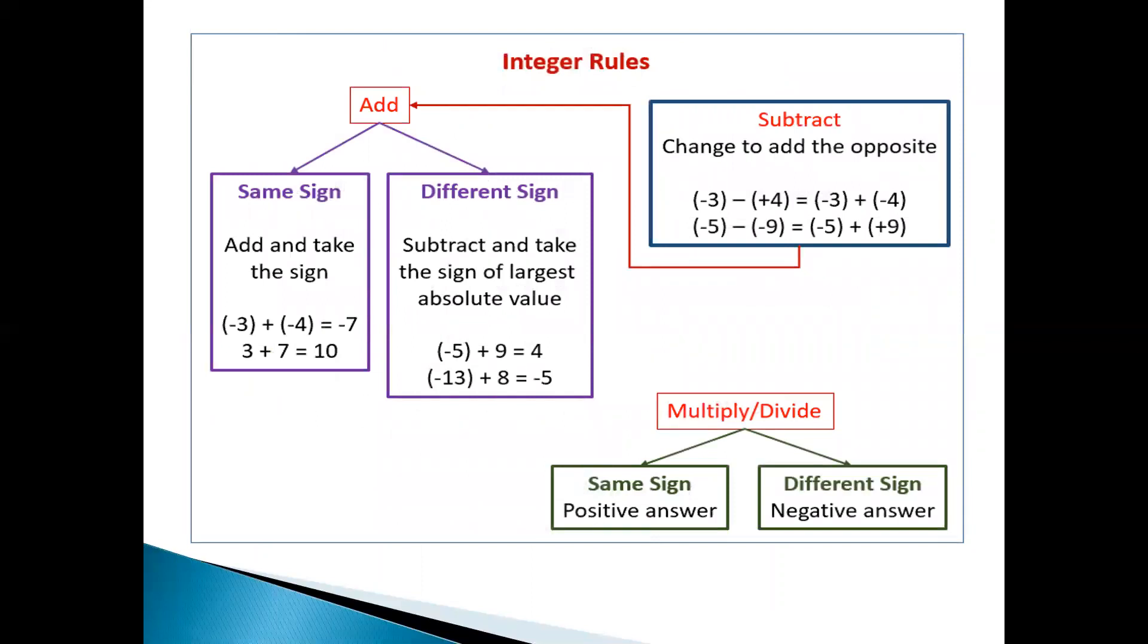The rules of integer: When you have to add same sign, add and take the sign. Different sign, subtract and take the sign of the largest absolute value. In the same way when you have to subtract, change to add the opposite. Multiply and divide: same sign, positive answer; different sign, negative answer.